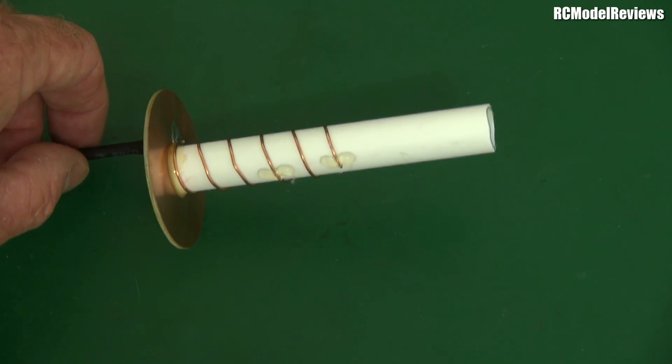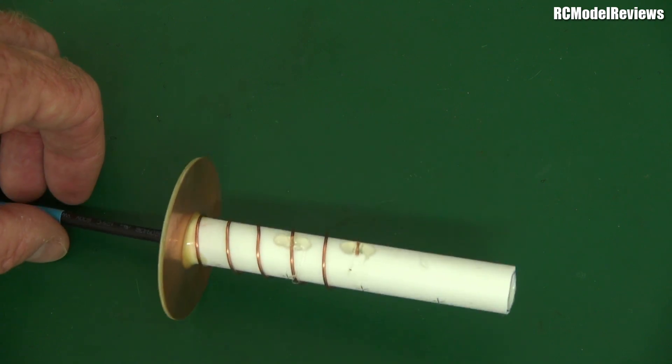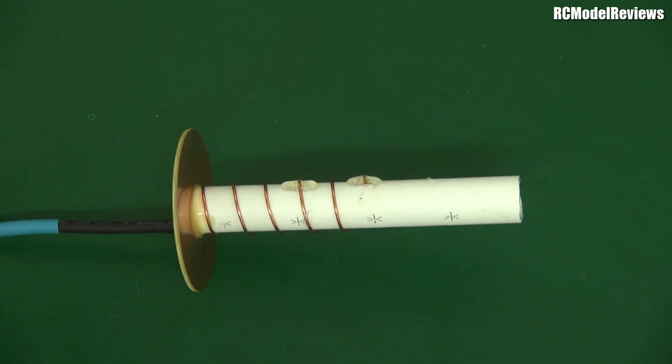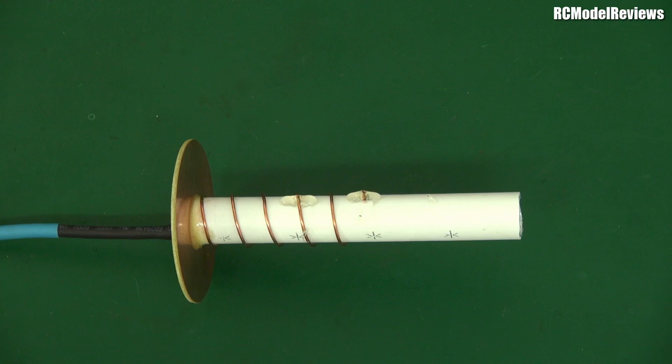If this did have metal in this tube then we wouldn't have got anything like the performance that we saw yesterday with the seven turns. Let's go and test out the five turn now before the rain comes.